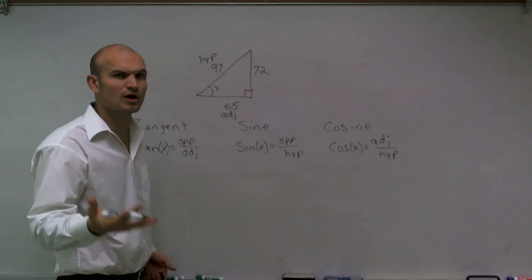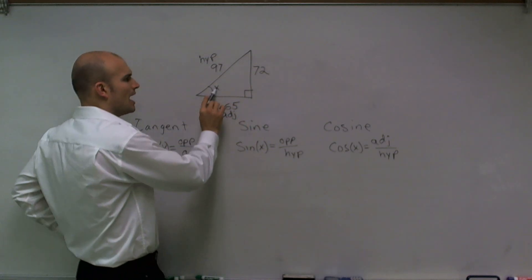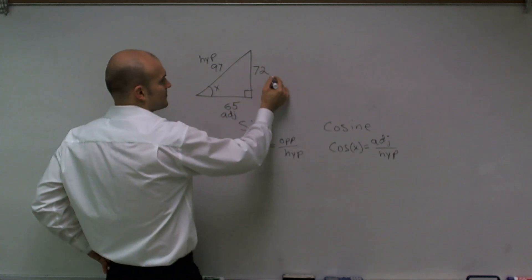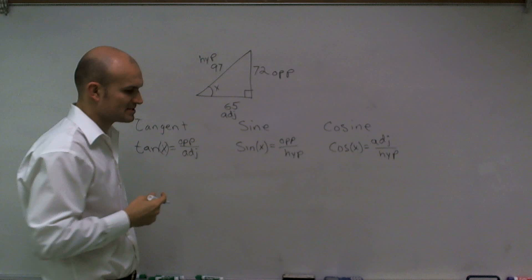By process of elimination, or one way to look at it is your opposite is always the side length that's opposite of your original angle. So 72 is going to be my opposite.